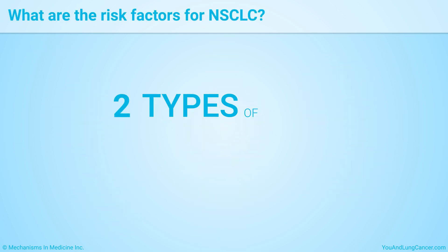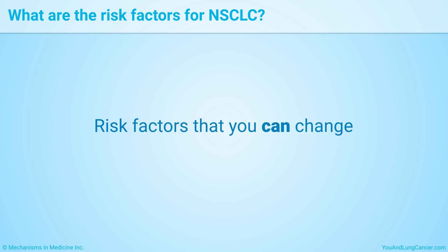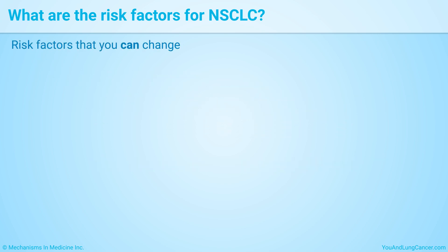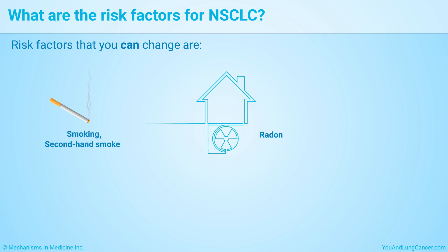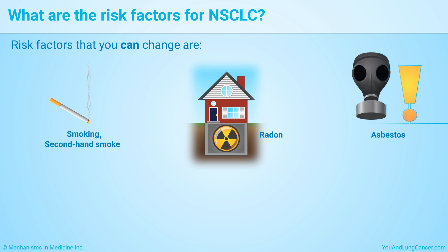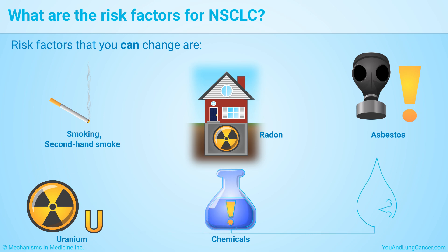There are two types of risk factors for Non-Small Cell Lung Cancer: risk factors that you can change, and risk factors that you can't change. Risk factors that you can change are smoking, being exposed to secondhand smoke, radon (like in a basement), asbestos (by working in mines, mills, textile plants, or with old insulation), uranium and other radioactive materials, chemicals like arsenic, coal products, and diesel fumes, and arsenic in drinking water.